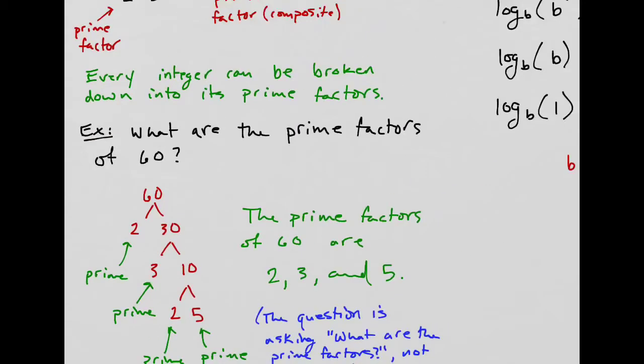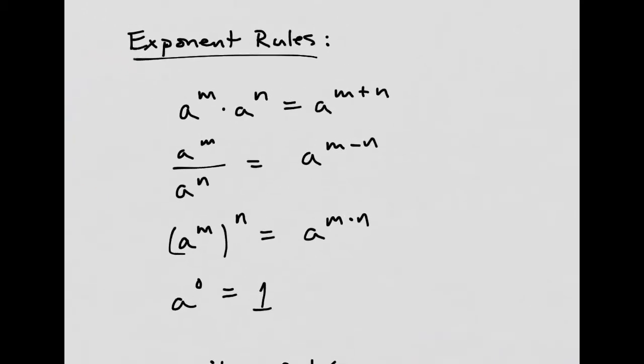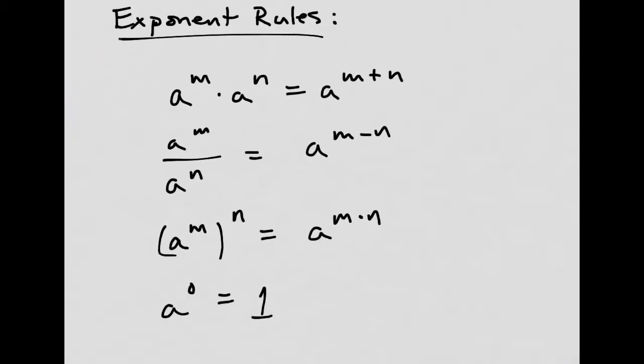The next thing I want to do is review the exponent rules. If you're multiplying and the bases are the same, you add the exponents. And remember, you can go from this to this, or from this to that. If you're dividing with the same base, then you subtract the exponents, and you can go both ways, back and forth.